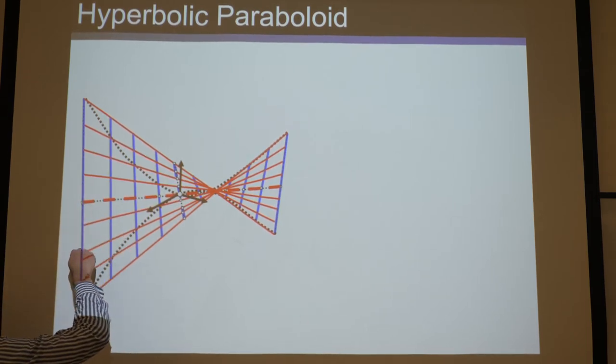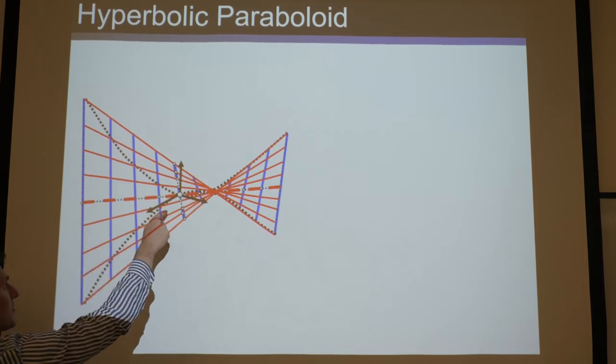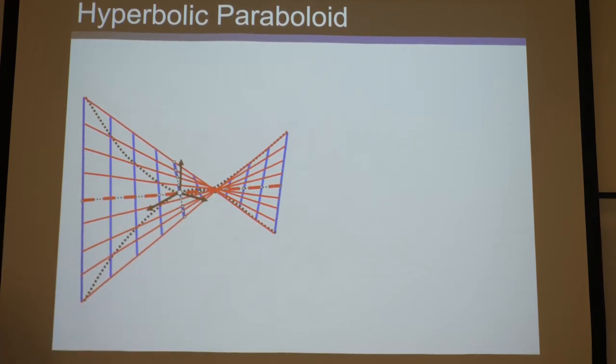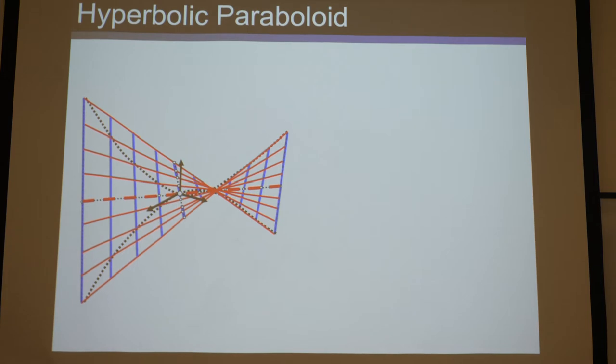So you can think about it, this line intersects this blue one there, this blue one there, this blue one there, every single blue one in the entire thing, and that's true of every red line and true of every blue line.